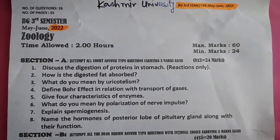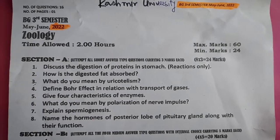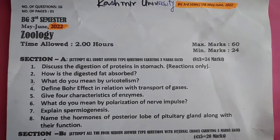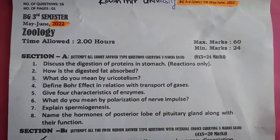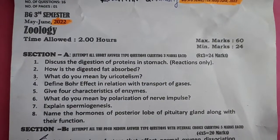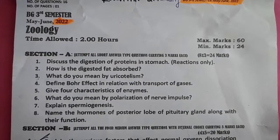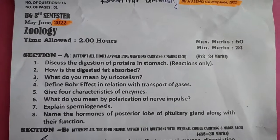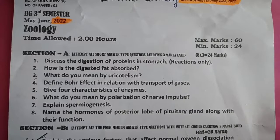Discuss the digestion of proteins in the stomach — reactions only. How is digestive fat absorbed? What do you mean by uricotelism? Define the Bohr effect in relation to the transport of gases. Give 4 characteristics of enzymes.